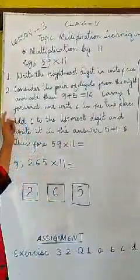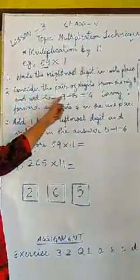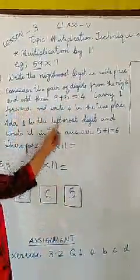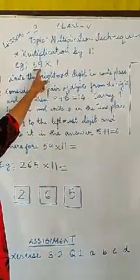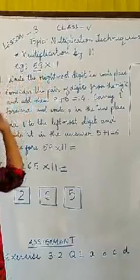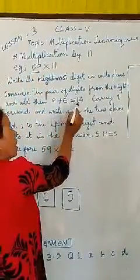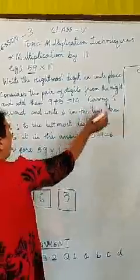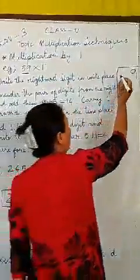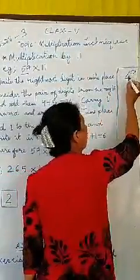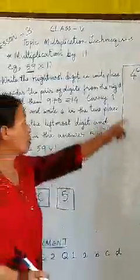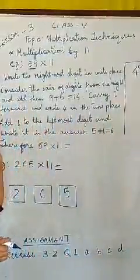And the second step is, consider the pair of digits from the right and add them. The rightmost number is 9 and the other is 5. So, let us add this 2. 9 plus 5, we get 14. Carry 1 forward and write 4 in the 10th place. Let us write 4 in the 10th place and carry 1 forward to the next.